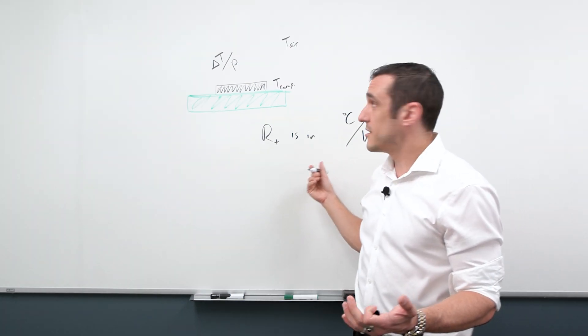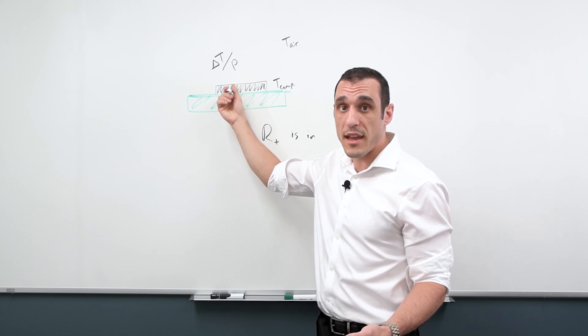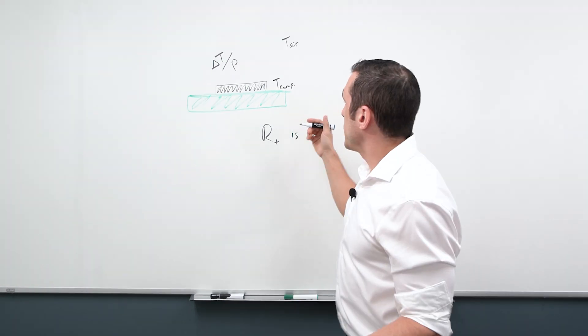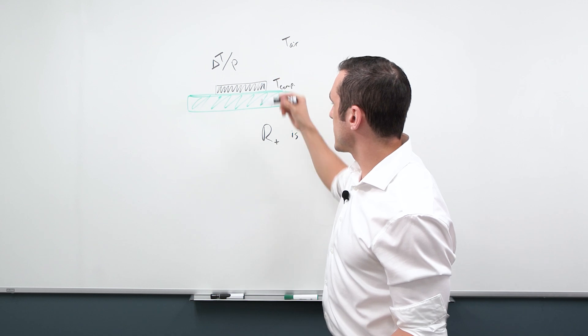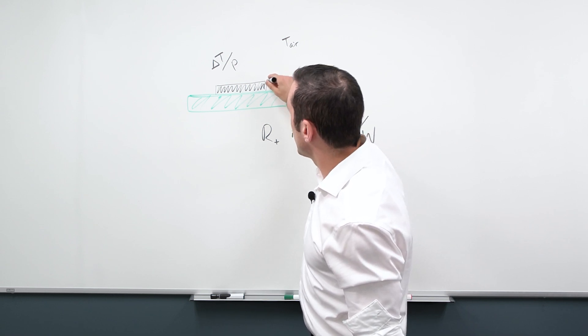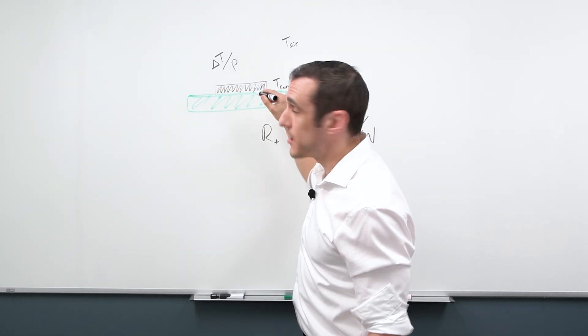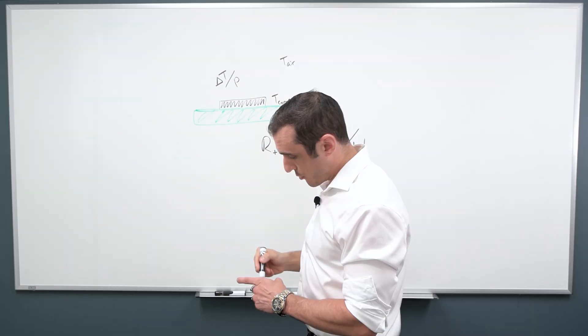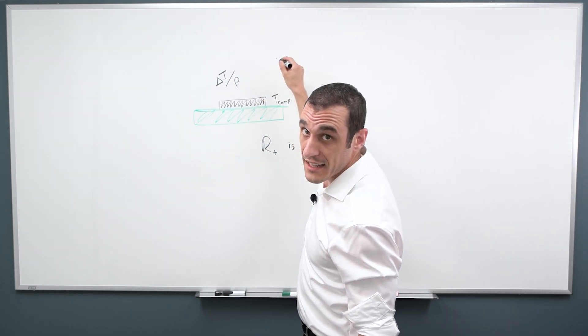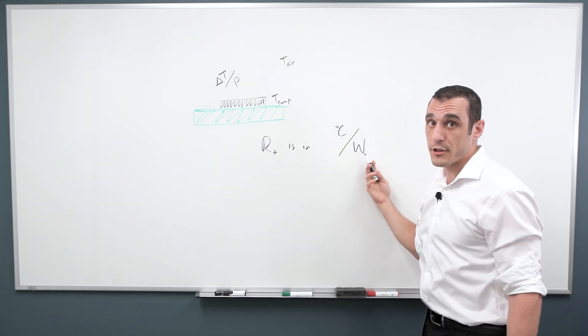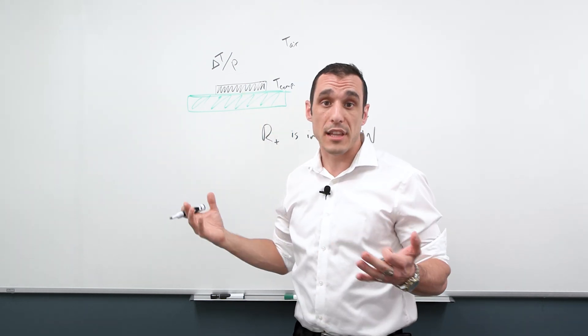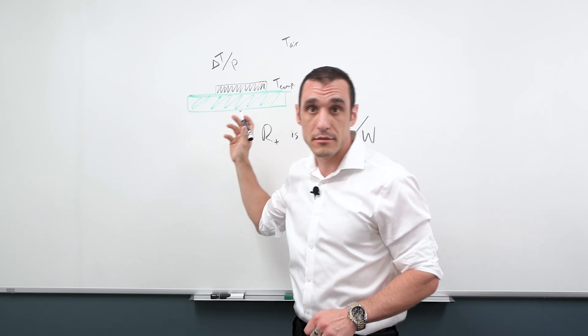This is a very simple calculation. As long as I know the power that this component is dissipating in watts, I can calculate essentially what its temperature rise is. Now you have to be careful here because thermal resistance is quantified in specific situations. So it can be quantified between the package, meaning the outside of the component, and ambient or air. So what it's really telling you is what the temperature difference is going to be between the package surface and air for a given power dissipation.